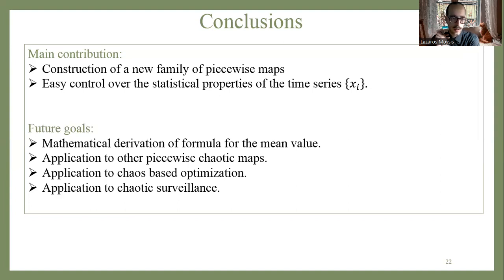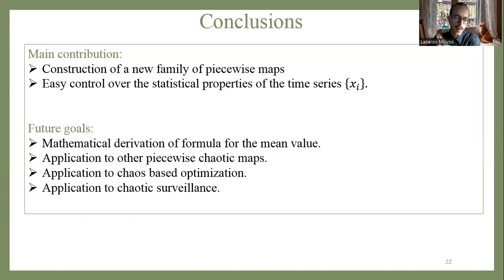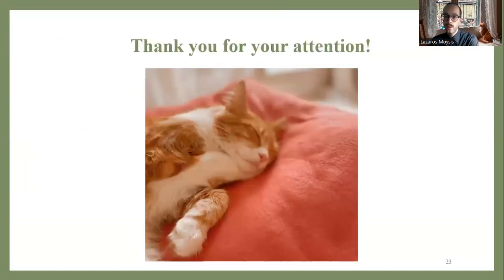We are also working on a side project in chaotic surveillance — applying maps with different mean values to the motion of a camera or UAV to observe if performance improves. That requires extensive simulations and hardware implementation but is a future goal. Overall, we have a solid dynamical systems theory result and a wide family of maps with many potential applications to explore. We are focused this summer on more maps, chaos-based optimization applications, and possibly UAV surveillance. Thank you for your attention.